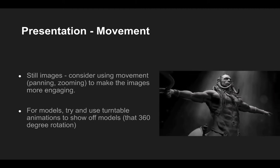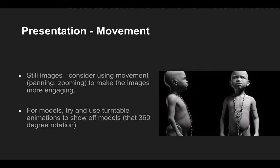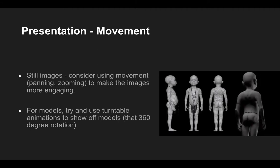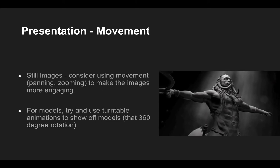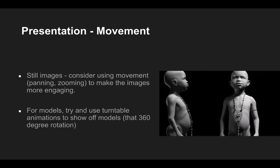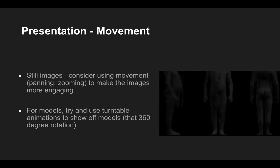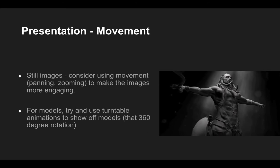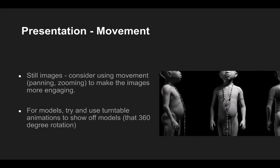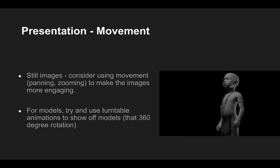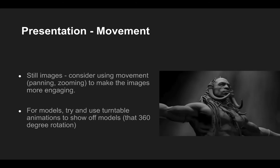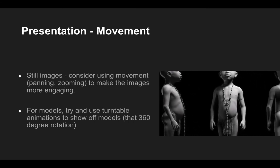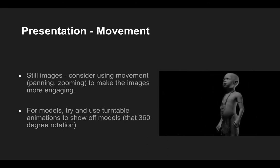Demo reels are particularly important for showing off motion — this makes reels particularly important for highlighting animation, rigging, effects, compositing, previs, anything that has motion as a key component. We can also use movement to create engagement for our viewers, so we want to avoid just showing still images if possible. For still images or high quality still renders of models, consider using movements such as panning or zooming to make the images more engaging. For models, generally we can use turntables to show off the models, which helps to highlight the volume and form. Where possible, mix it up — cut to close-ups to highlight particular skill sets or particularly nice bits of modeling.